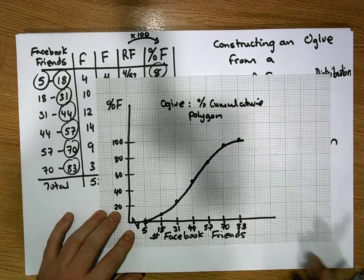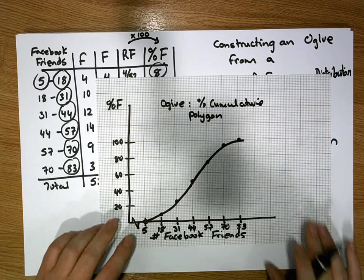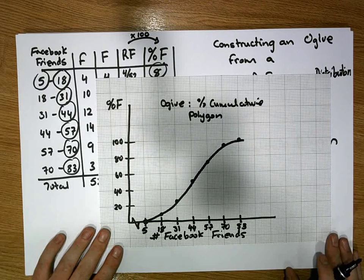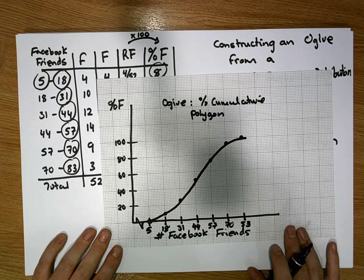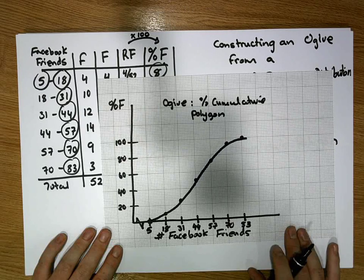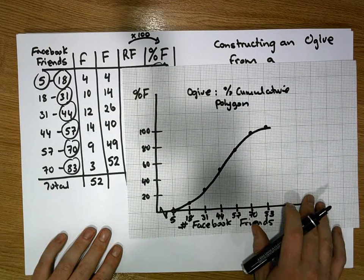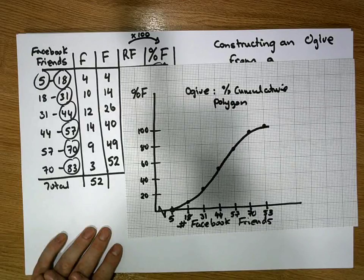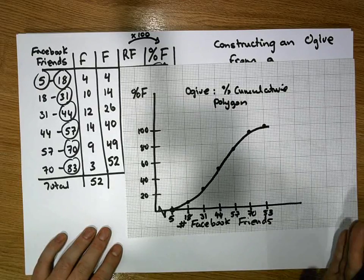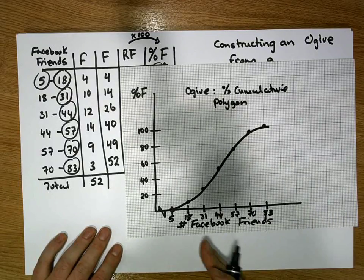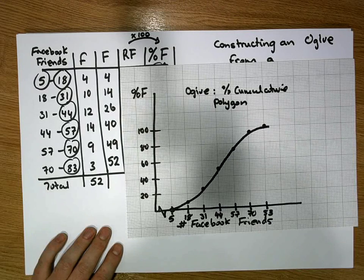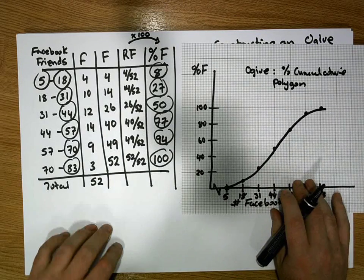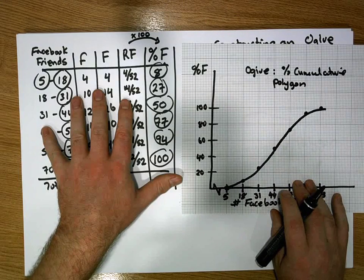Once we've created our ogive, there's a number of things that we can do. We can calculate the median value. Don't forget the median value is the value that splits the data set up into two equal portions, where the number of observations less than that is equal to the number of observations greater than that, or where there's 50% of the observations less than that. And if we just look at the characteristics of this particular distribution table here...